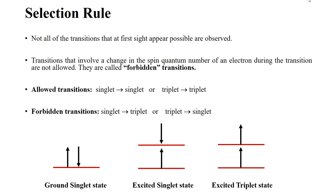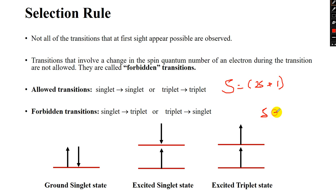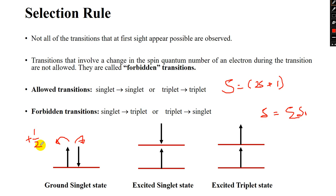The selection rule is very simple — you have to follow the spin quantum number. There is capital S, called the spin quantum number, which equals 2s + 1, where small s is the summation of all spin states s_i. In the ground state, two electrons have opposite spins: one moving anti-clockwise (plus half) and the other clockwise (minus half). The summation of s_i is plus half plus minus half, which equals zero, so 2s + 1 equals one.